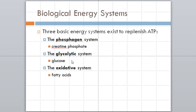These are your three primary fuel systems. You have the phosphagen system with creatine phosphate as the substrate, the glycolytic system with glucose as the primary fuel source, and the oxidative system with fatty acids as the primary fuel source. Each of these is not exclusive — you can get glucose oxidatively and you can do partial metabolism of fatty acids in the glycolytic system — but these are your primary components.